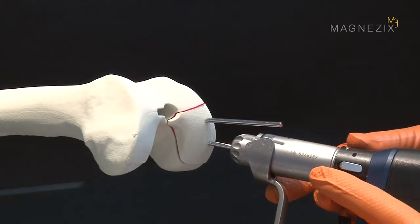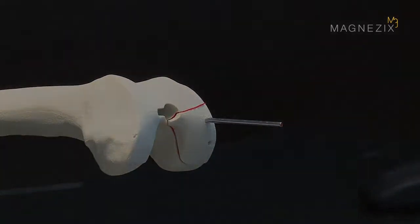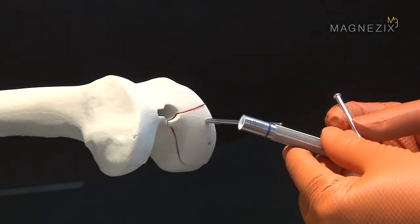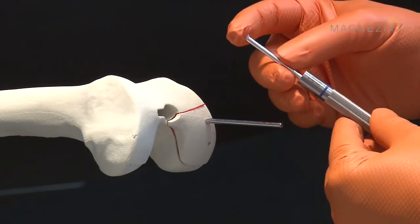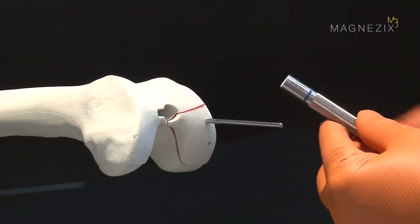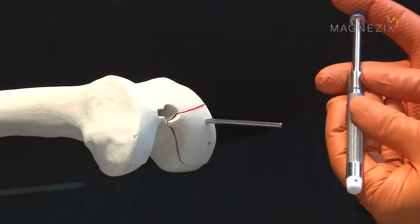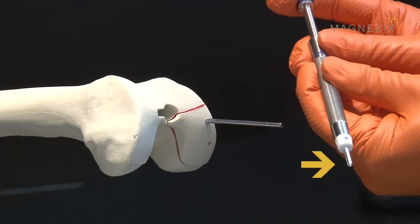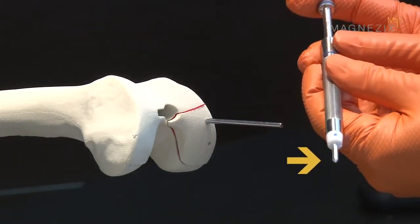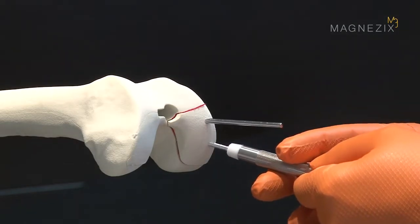The first reduction wire is now removed. The first 50 mm pin is inserted into the impactor sleeve. The impactor insert is reinserted and pushed forward until the pin appears at the impactor tip. The tip of the Magnesix pin can now be positioned in the pilot hole.